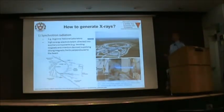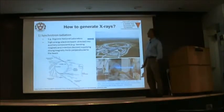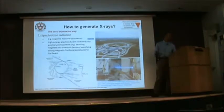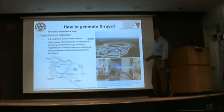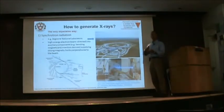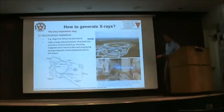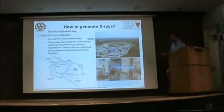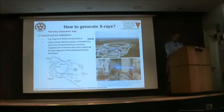So how do we generate X-rays? One way is going to a facility like Argonne National Labs — that's the very expensive way: synchrotron radiation. In this facility they create very high energy electron beams, which are directed into auxiliary components like bending magnets or insertion devices. When the electron beam is deflected, the electrons give off X-rays. Here you're seeing it as a blue light — not because it has a color, but because it's ionizing oxygen and nitrogen atoms, which in turn create the blue light.